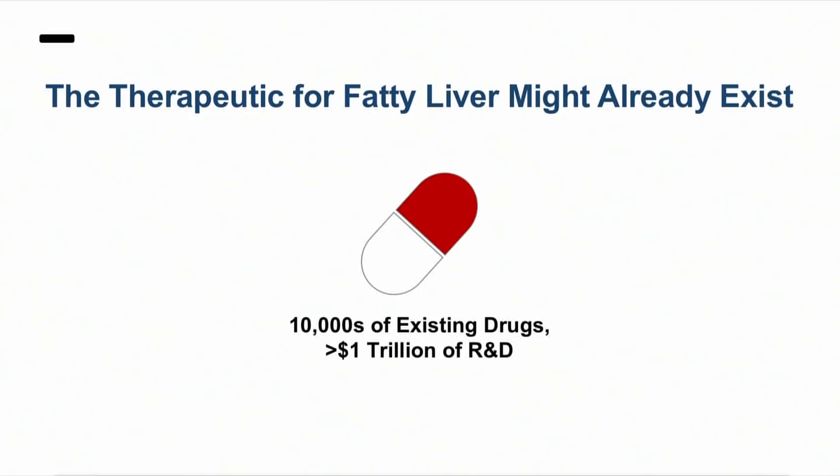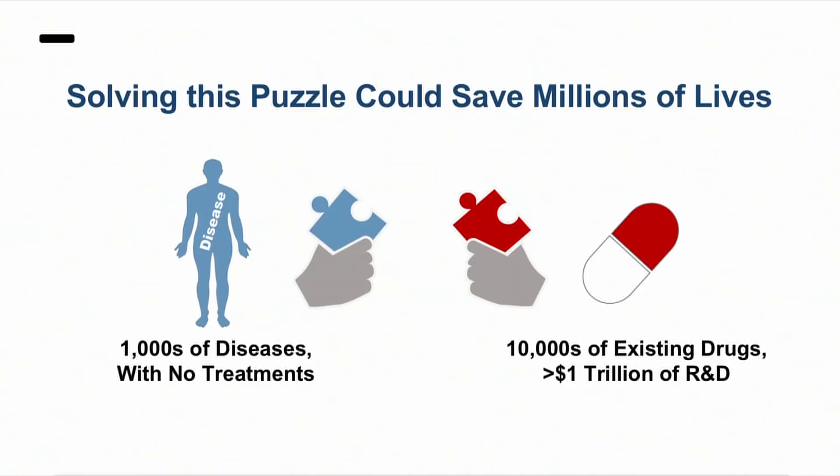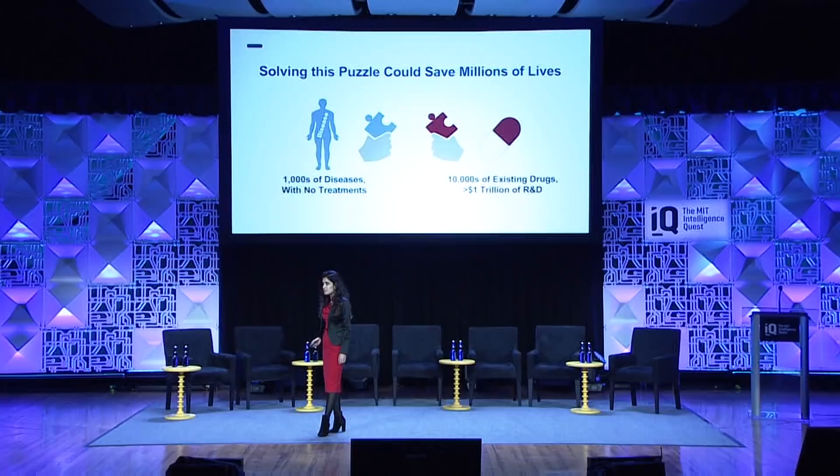But can you imagine the drug for treating fatty liver might already exist? For example, there are thousands of drugs that have been developed partially to treat diabetes and obesity. One of them may have therapeutic effects for fatty liver, but we don't know. There are thousands of diseases with no treatment. If we could figure out which one of these drugs could work for which one of these patients, we can save millions of lives.